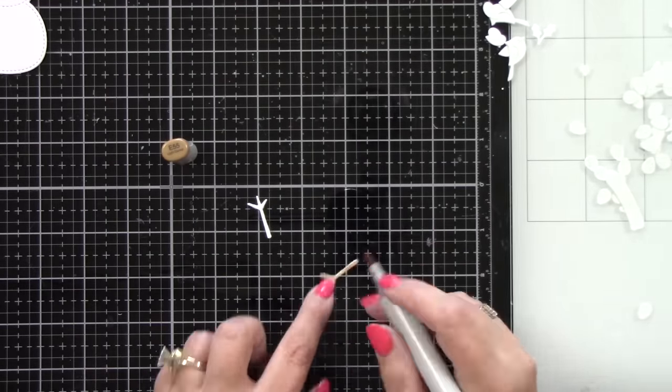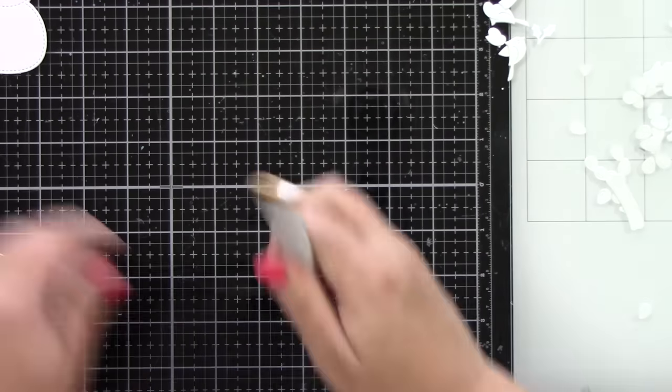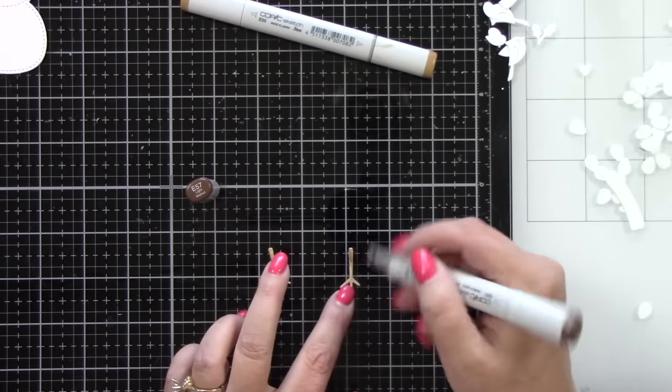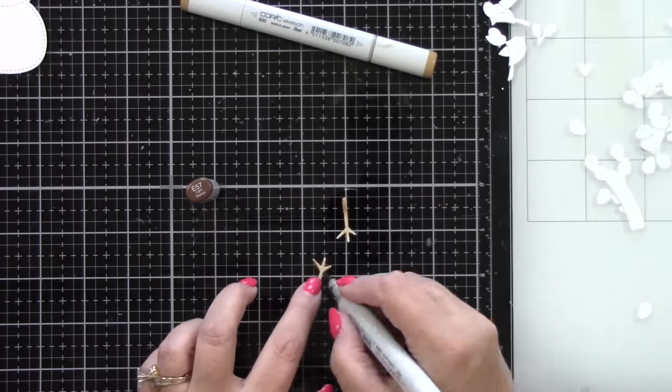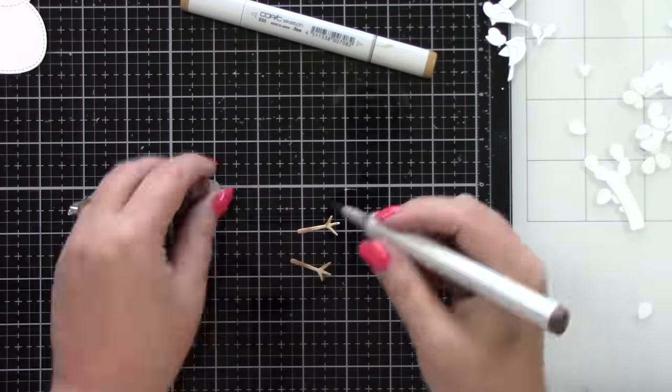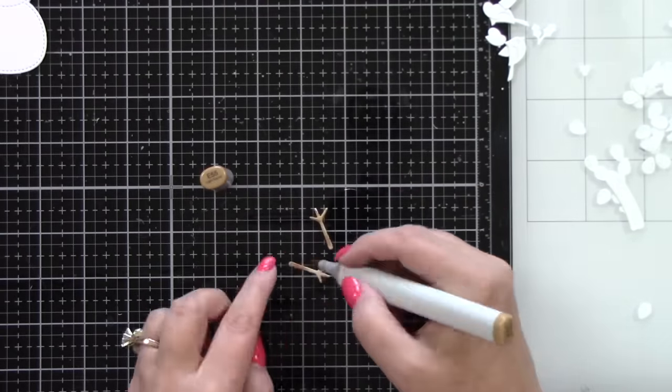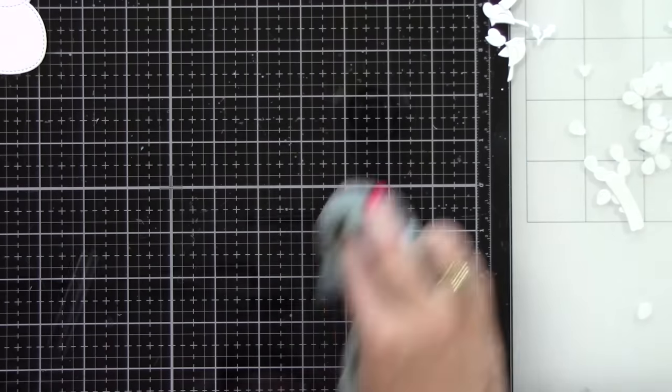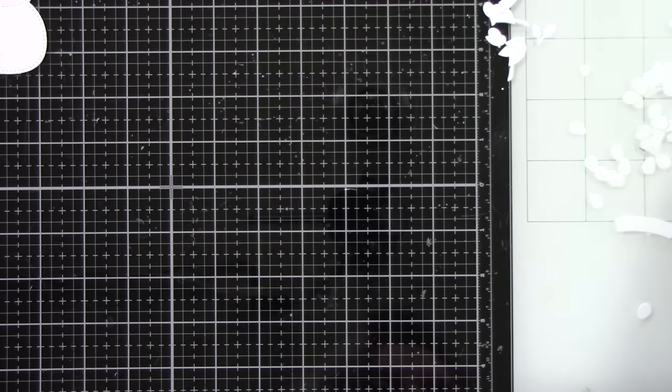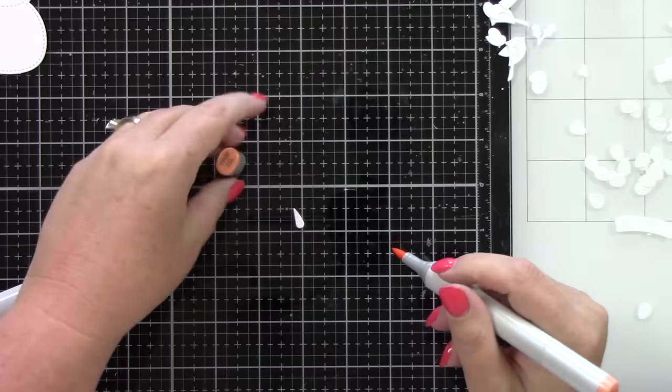Instead of die cutting it from colored cardstock, there were a lot of pieces and I actually felt like it would be really kind of different. It gives you a no-line coloring look when you color your die cuts with a color medium like colored pencils or alcohol ink. So that's what I'm going to do.